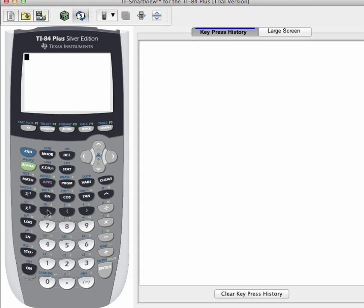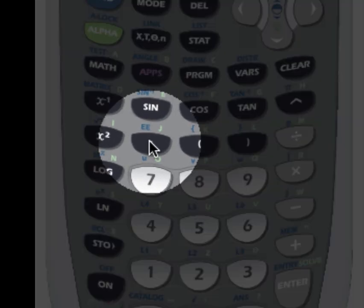The button you want to be using is this button right here, the comma button. And if you look above it, you've got the symbol EE. That EE is the button your calculator uses to interpret numbers in scientific notation.